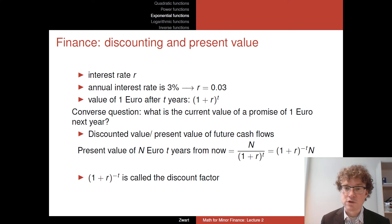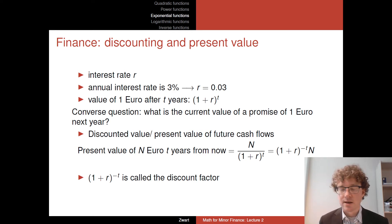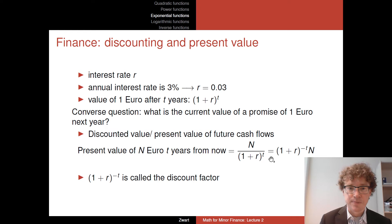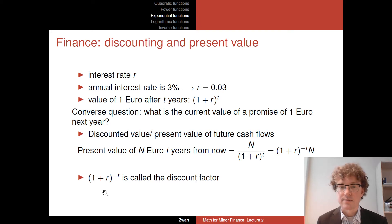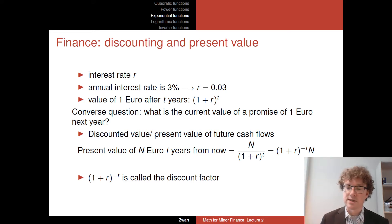We can write N divided by (1 + r)^t as N times (1 + r)^(−t). The term (1 + r)^(−t) is called the discount factor in finance. The minus t refers to the fact that this appears in the denominator. The discount factor is another example of an exponential function — time appears in the exponent, with a negative number in this case.